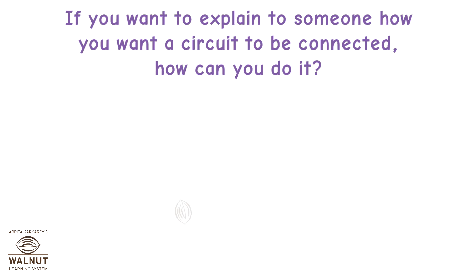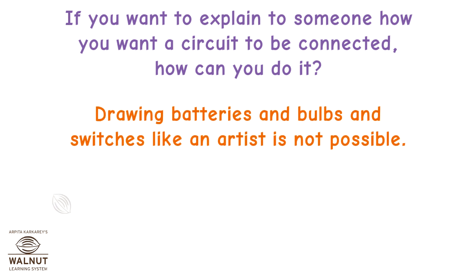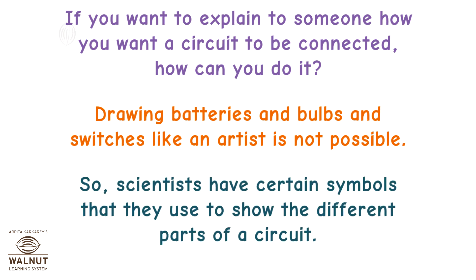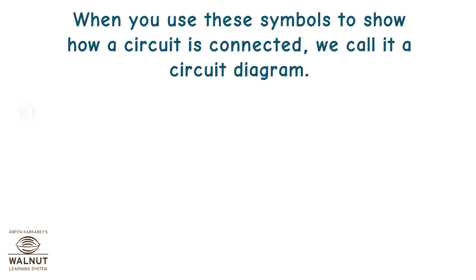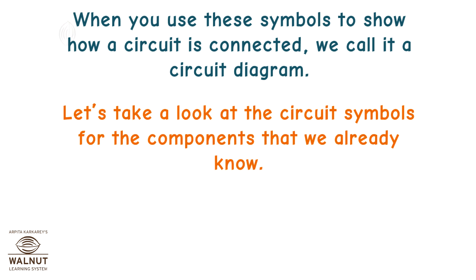If you want to explain to someone how you want a circuit to be connected, how can you do it? Drawing batteries and bulbs and switches like an artist is not possible. So scientists have certain symbols that they use to show the different parts of a circuit. When you use these symbols to show how a circuit is connected, we call it a circuit diagram.